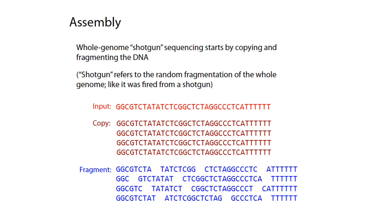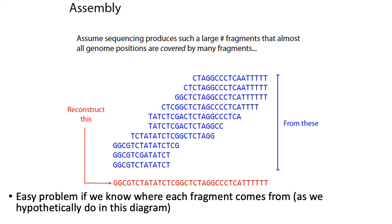You take these fragments and push them through one of your standard sequencing technologies. In this particular example, suppose you're doing super long read sequencing and the reads you get are those fragments at the bottom. The task is to answer the question: if you only know the sequence of the fragments in blue, can you figure out what the original genome sequence was in red?